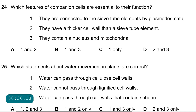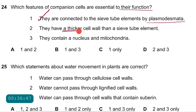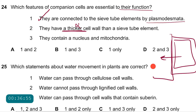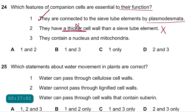Question 24: which features of companion cells are essential to their function? Statement 1 — they are connected to sieve tube elements by plasmodesmata — correct, because sucrose moves into sieve tube elements through plasmodesmata by diffusion. Statement 2 — they have a thicker cell wall than a sieve tube element — incorrect; a thicker wall would slow diffusion into the sieve tube element, so this is not an advantage. Statement 3 — they contain a nucleus and mitochondria — correct. Answer is B.